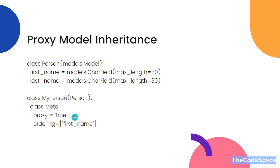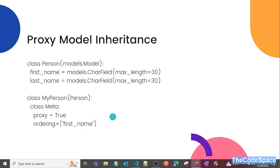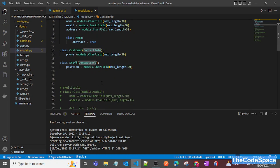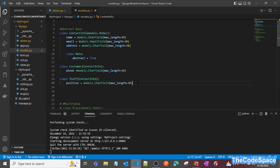In this example, we have one base class Person and one child class MyPerson. We have added proxy is equal to true into the Meta class, and also added an ordering property equal to first_name, so we are ordering the objects based on first name. Whatever we change in MyPerson will also get reflected in the Person table, and vice versa — because we have added proxy is equal to true.